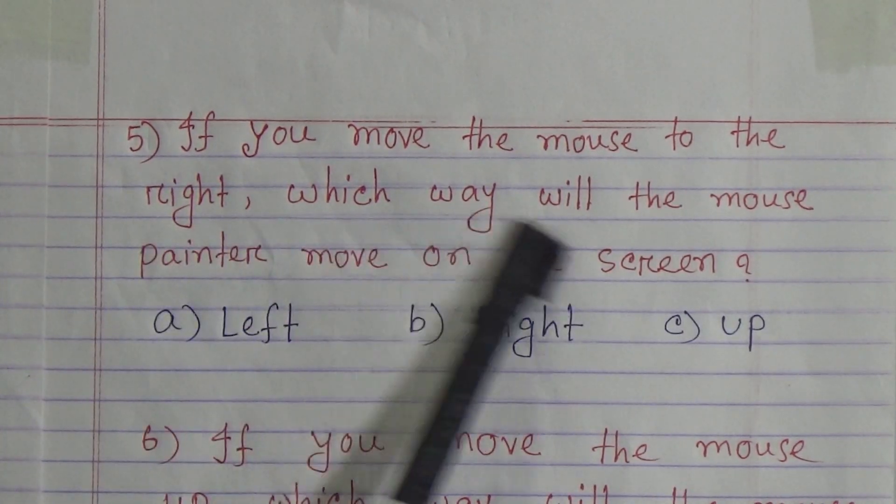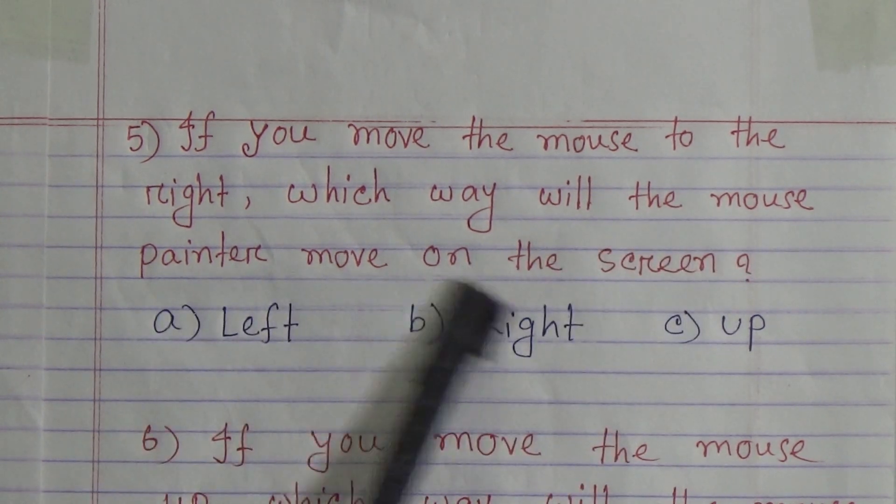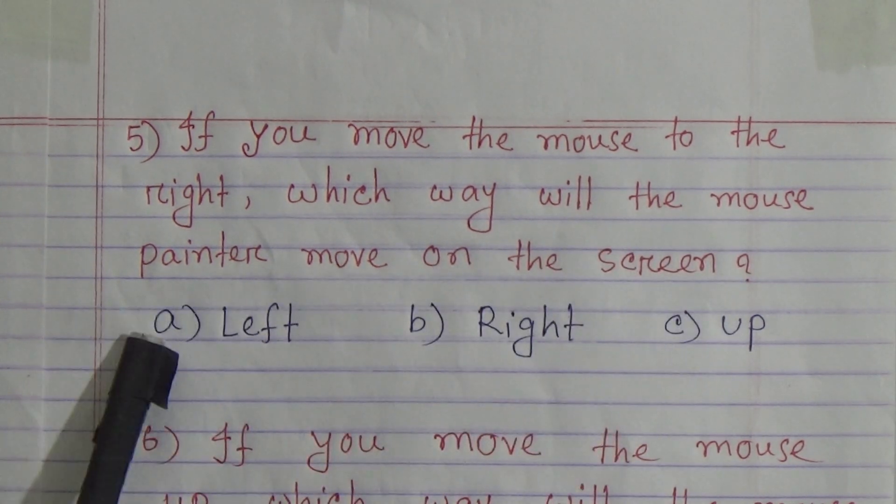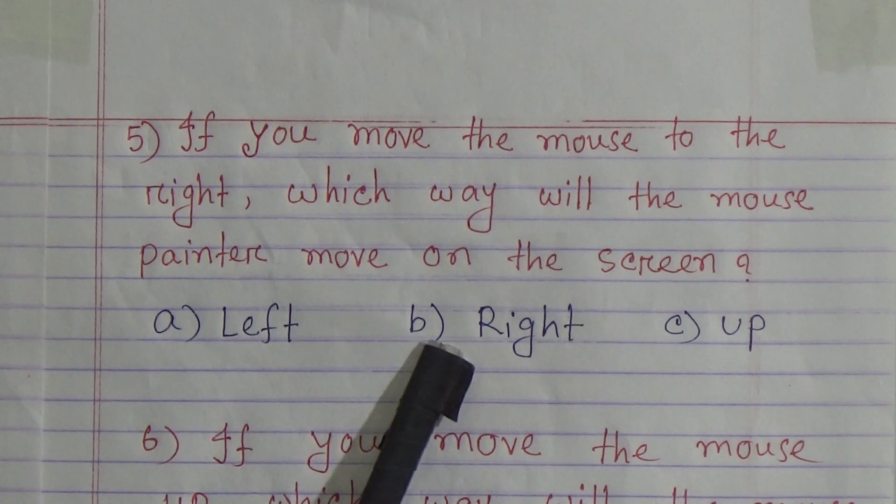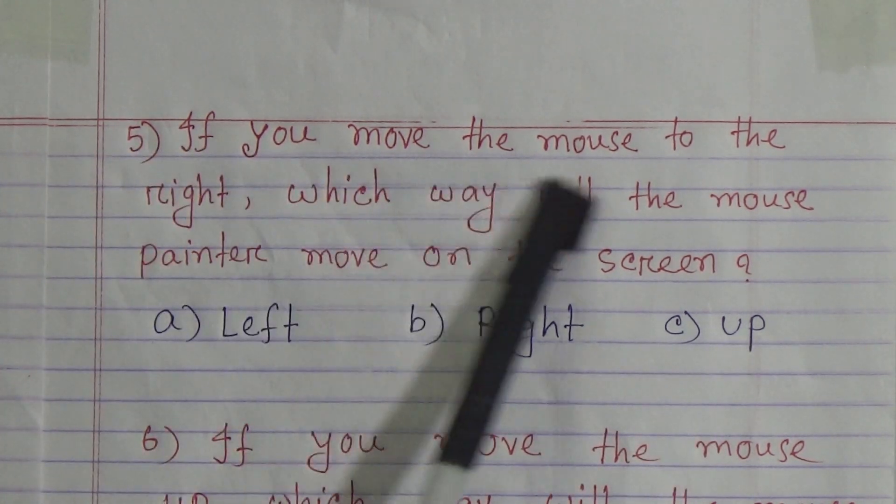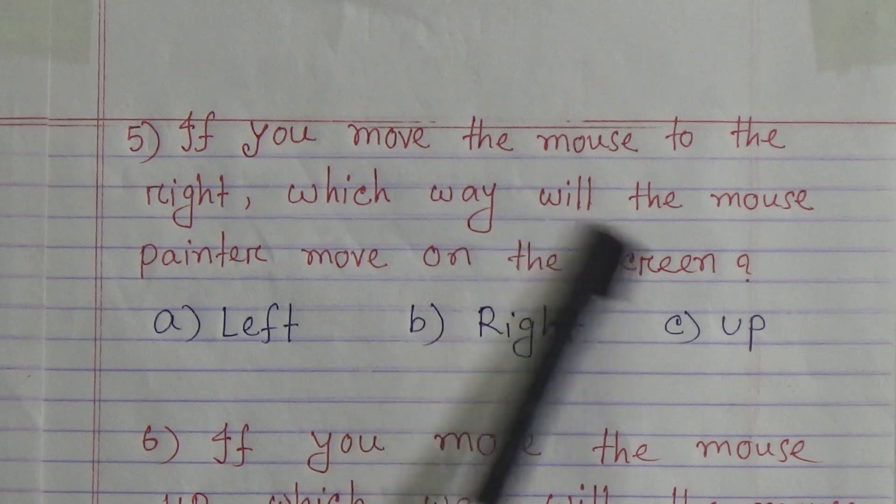If you move the mouse to the right, which way will the mouse pointer move on the screen? Option A: Left, Option B: Right, Option C: Up. The answer is right. Now last question, question number 6.